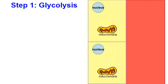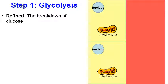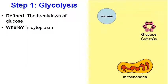Glycolysis is really the beginning of this energy-making process. Glycolysis is the breakdown of glucose, and this occurs in the cytoplasm of cells. After a meal, the glucose that you digest enters your bloodstream, and here's a molecule of glucose diffusing into the cytoplasm of a cell. The glucose is that ring of six carbons bonded together in a hexagon form. For simplicity, I've only drawn the six carbons, though glucose also has 12 hydrogens and six oxygens.